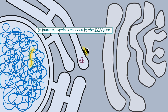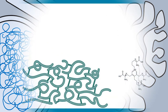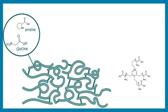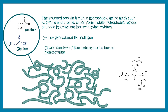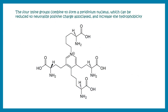Elastin is translated and modified in the endoplasmic reticulum. Unlike collagen, elastin does not undergo heavy glycosylation. Elastin majorly contains glycine and proline residues; apart from that, it also has lysine, which forms cross-links. Unlike collagen, it is not glycosylated, and it has very few hydroxyprolines and almost no hydroxylysines.